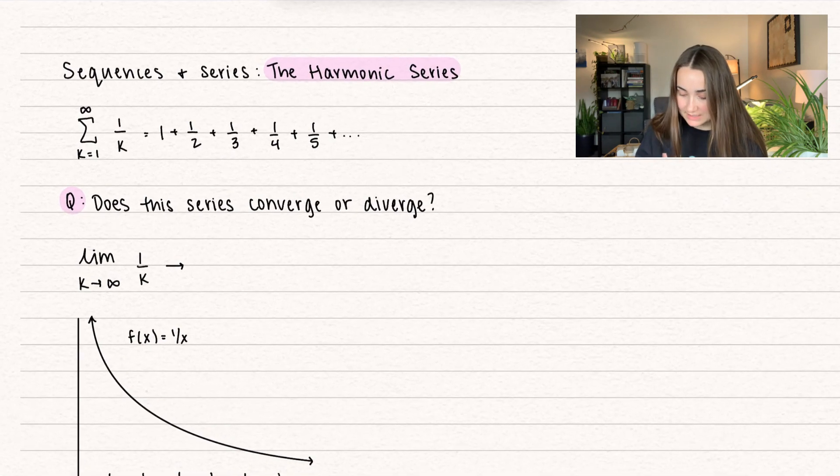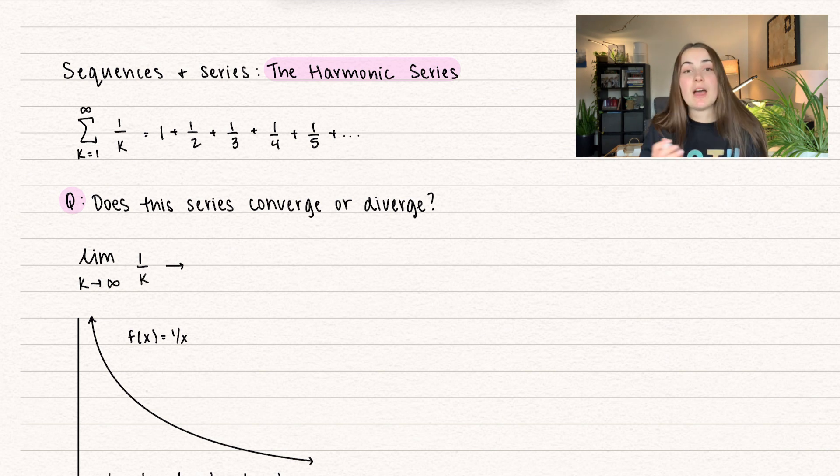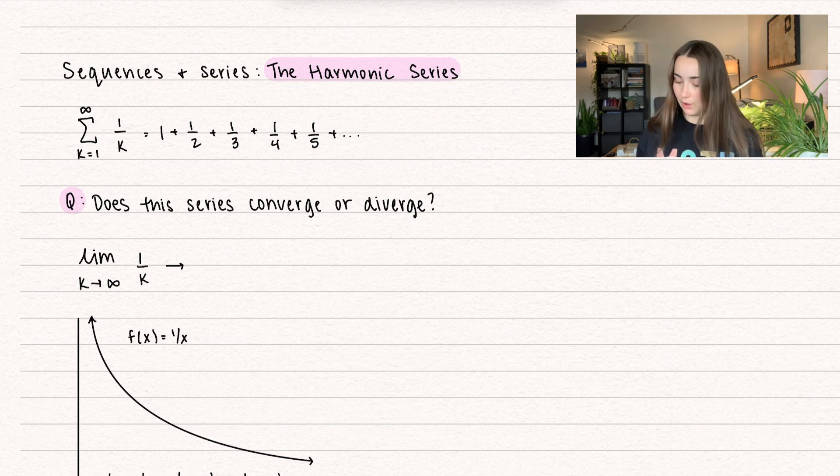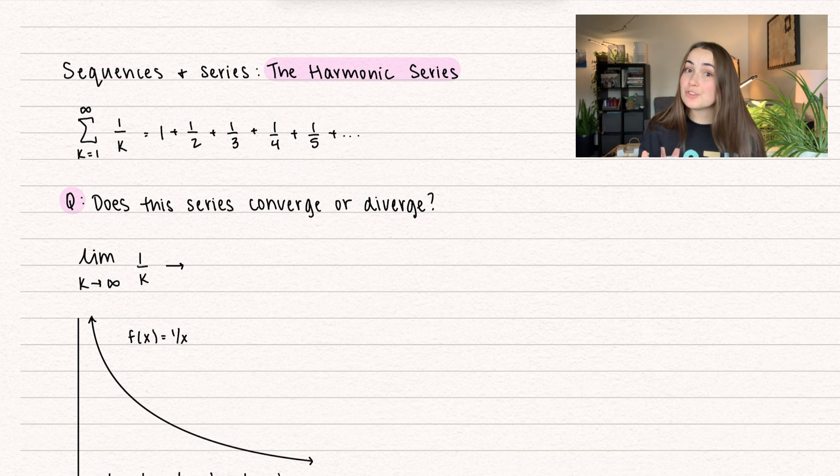Here we have what the harmonic series is. So it's a summation from k equals 1 to infinity of 1 over k. So as you plug in your k values and you add them up, you end up getting 1 plus 1/2 plus 1/3, 1/4, 1/5, and so on. So the big question of the series is, does it converge or diverge?